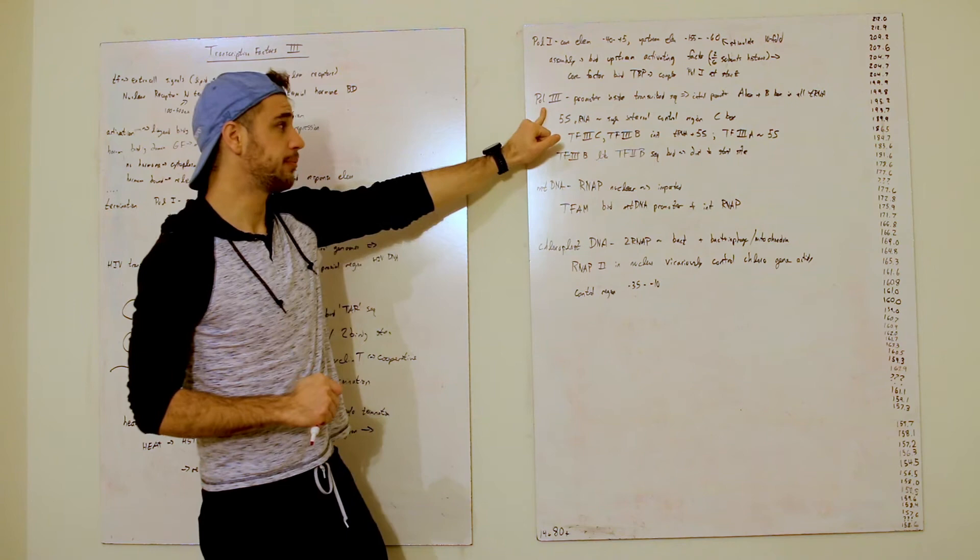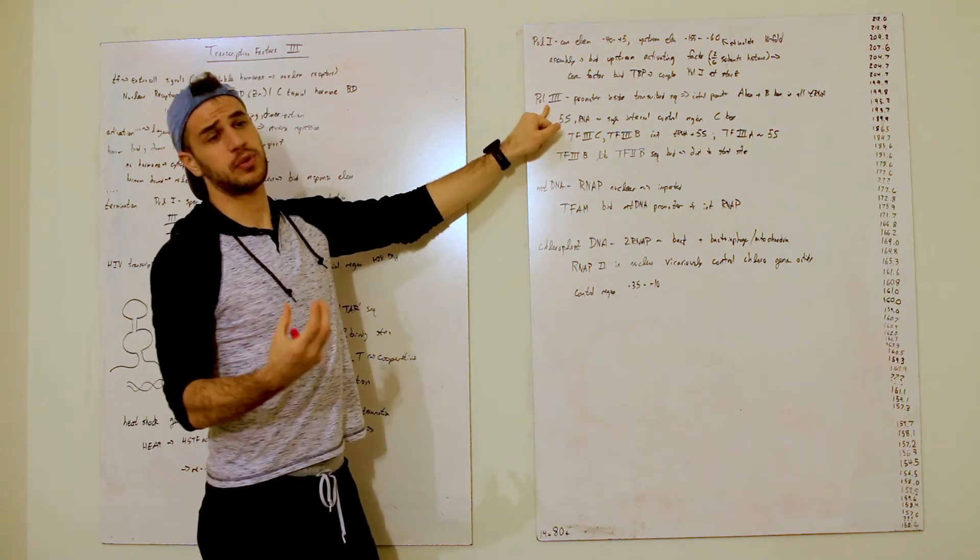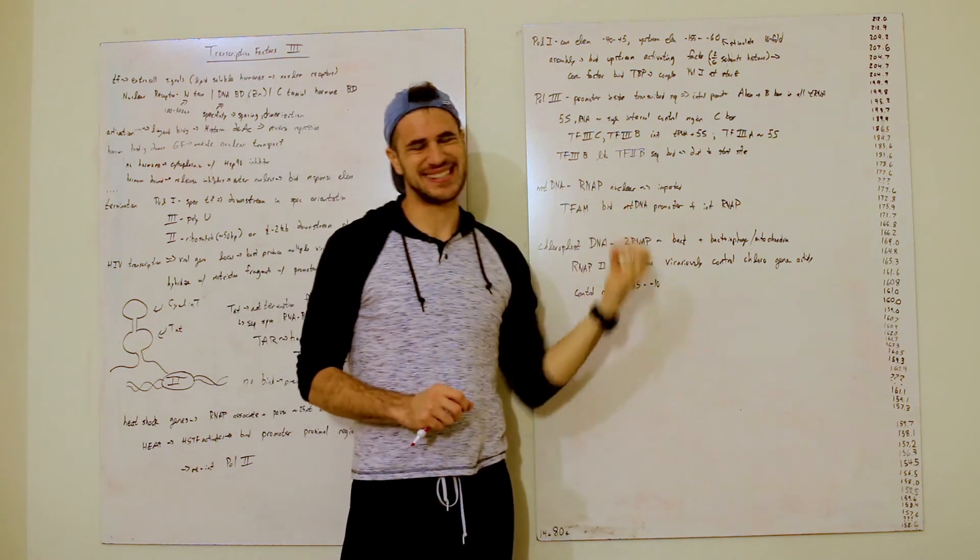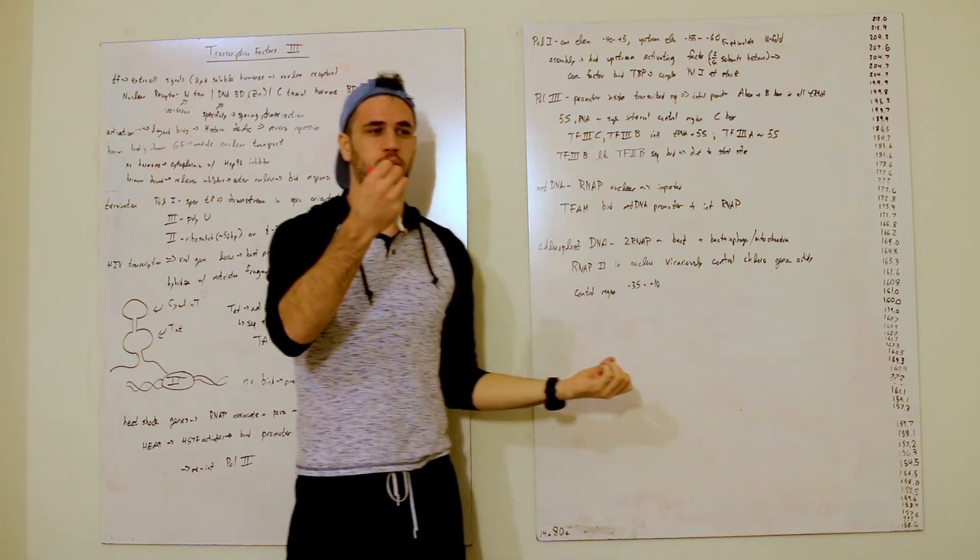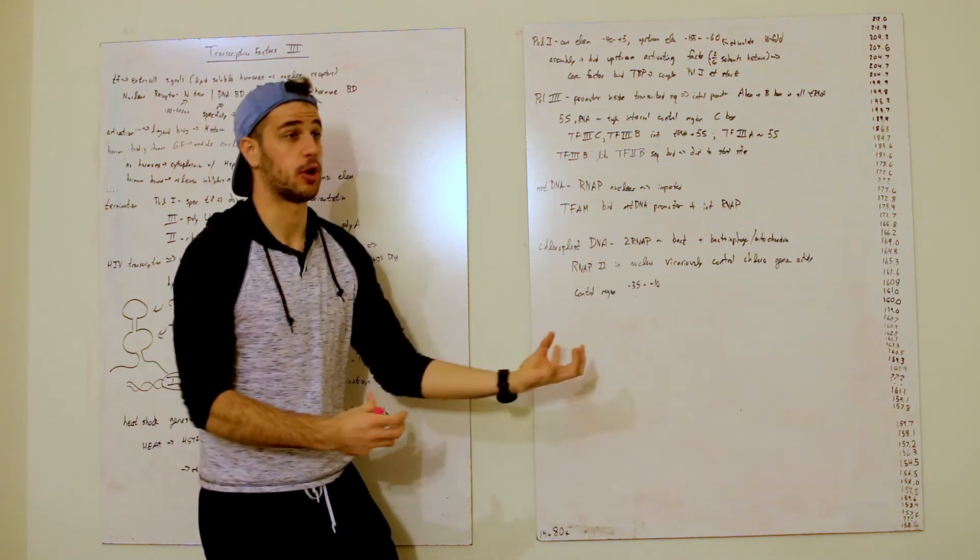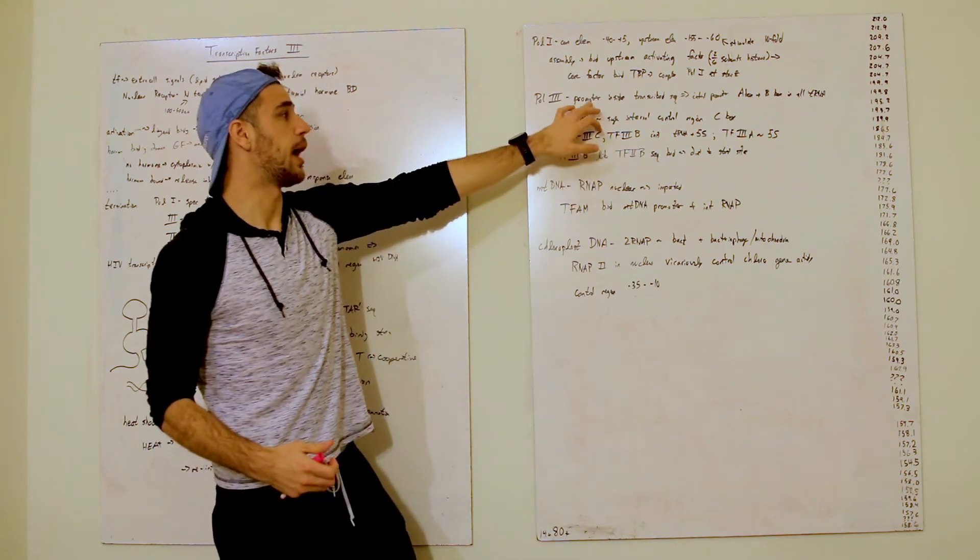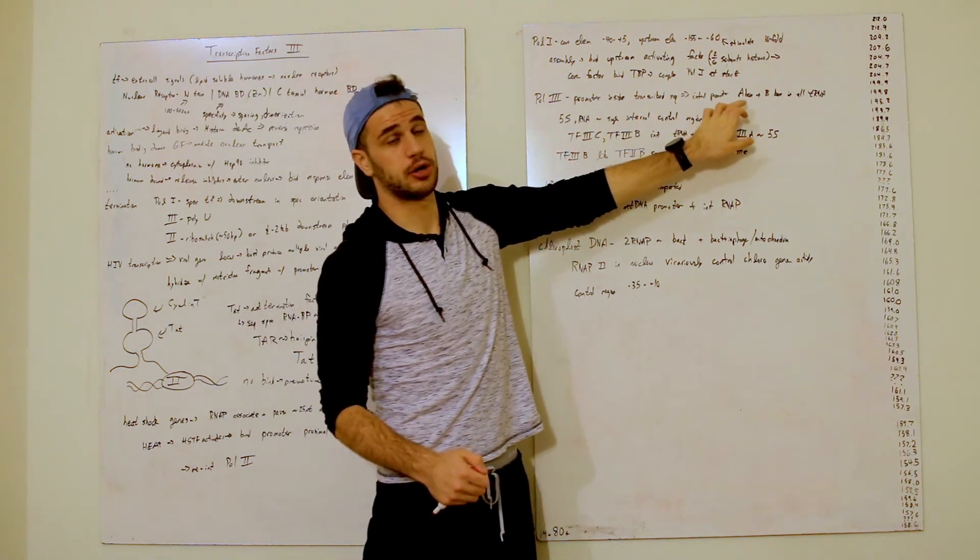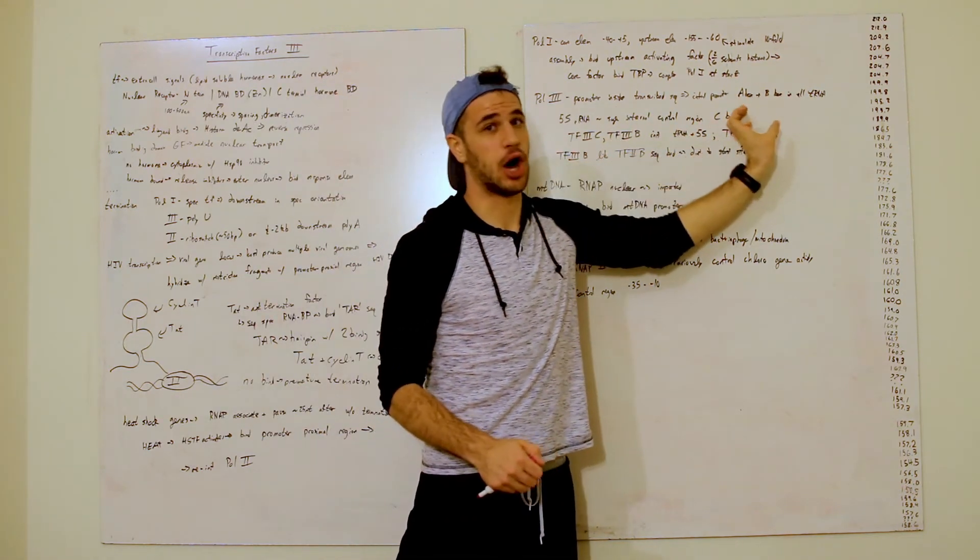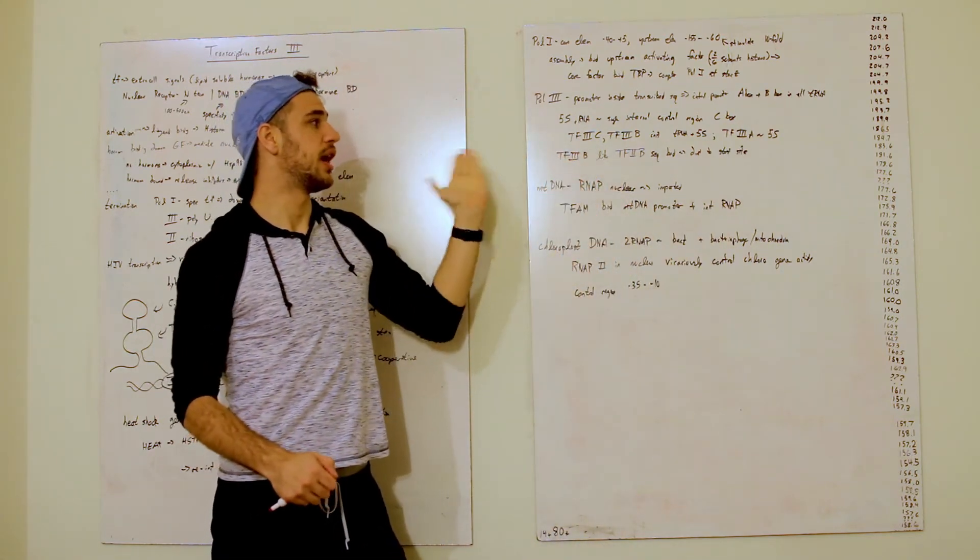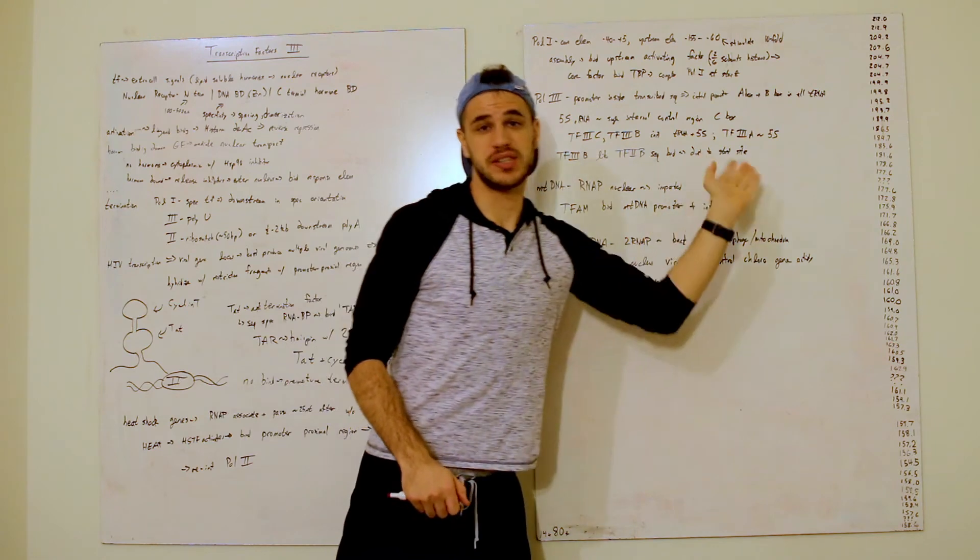Now, you have polymerase III. In polymerase III, the transcripts that it actually does are very interesting in that the promoter is inside the transcribed sequence. So, the promoter is part of the sequence itself. It's not this separate being like it is in polymerase I and polymerase III. And so, the internal promoters are known as the A-box and the B-box that are in all tRNA. However, the 5S RNA actually has its own internal control region, the C-box.